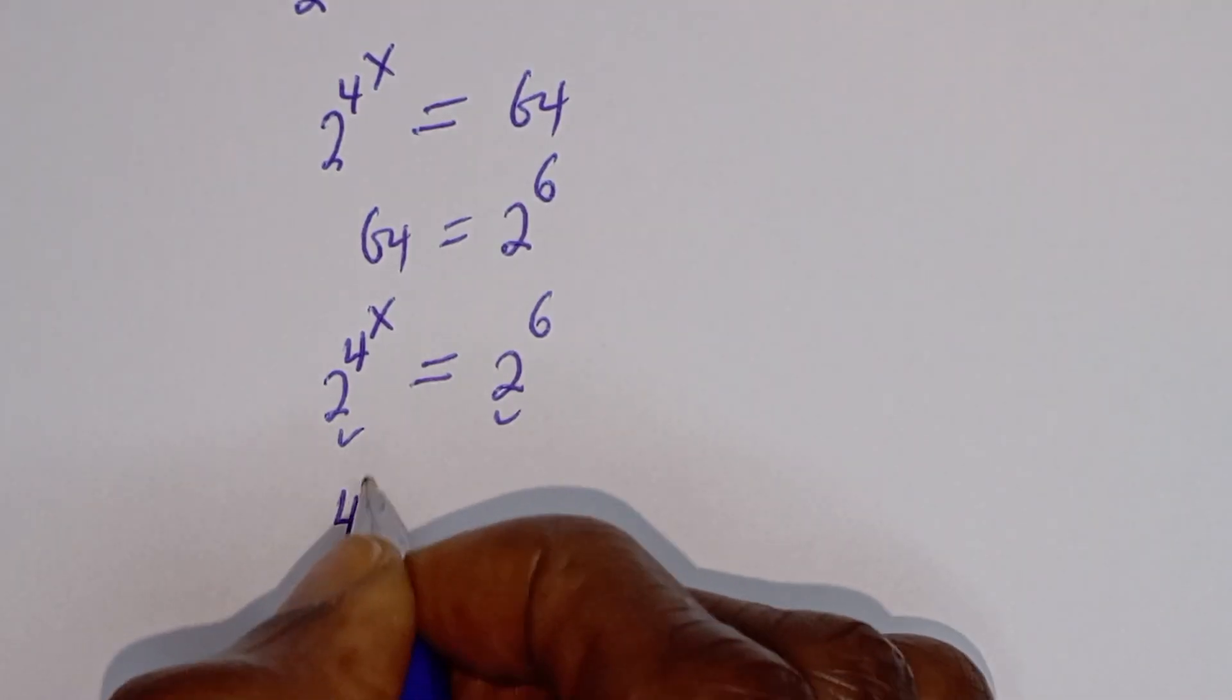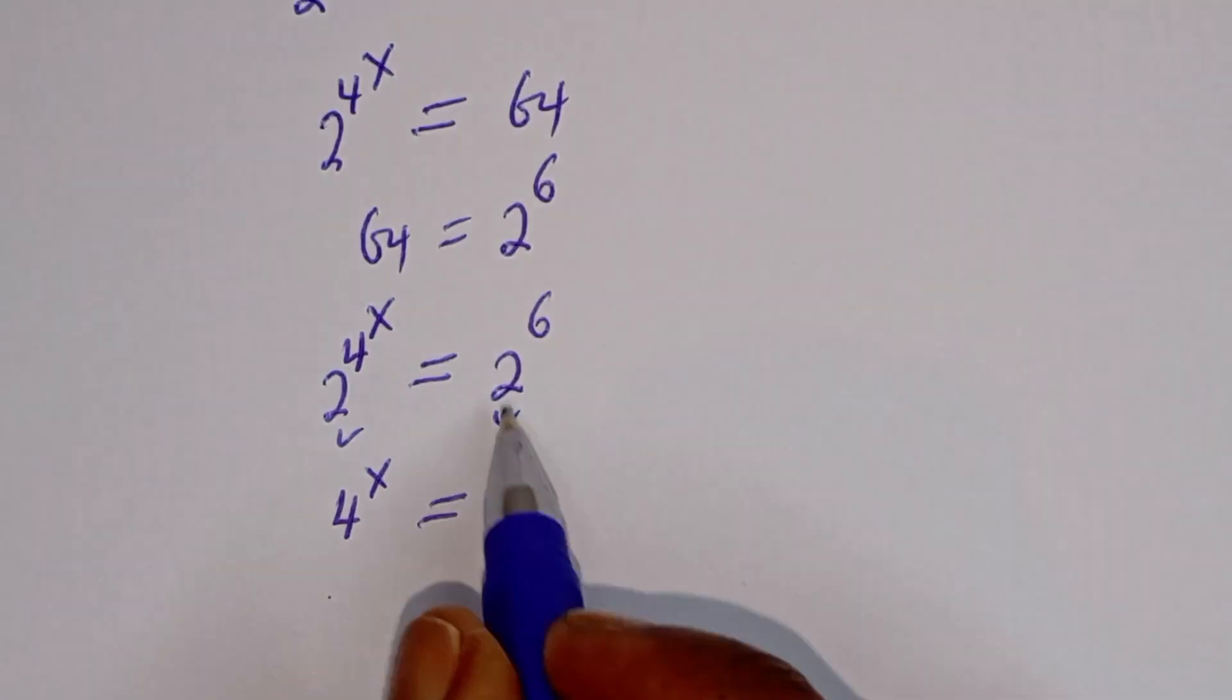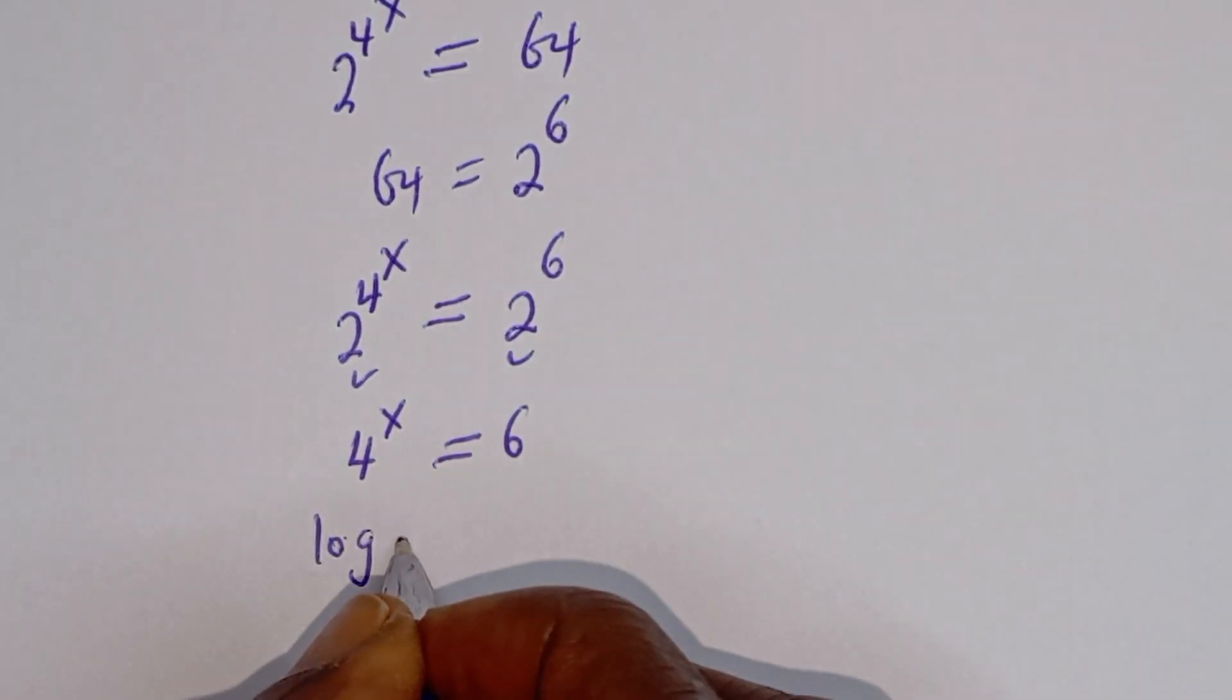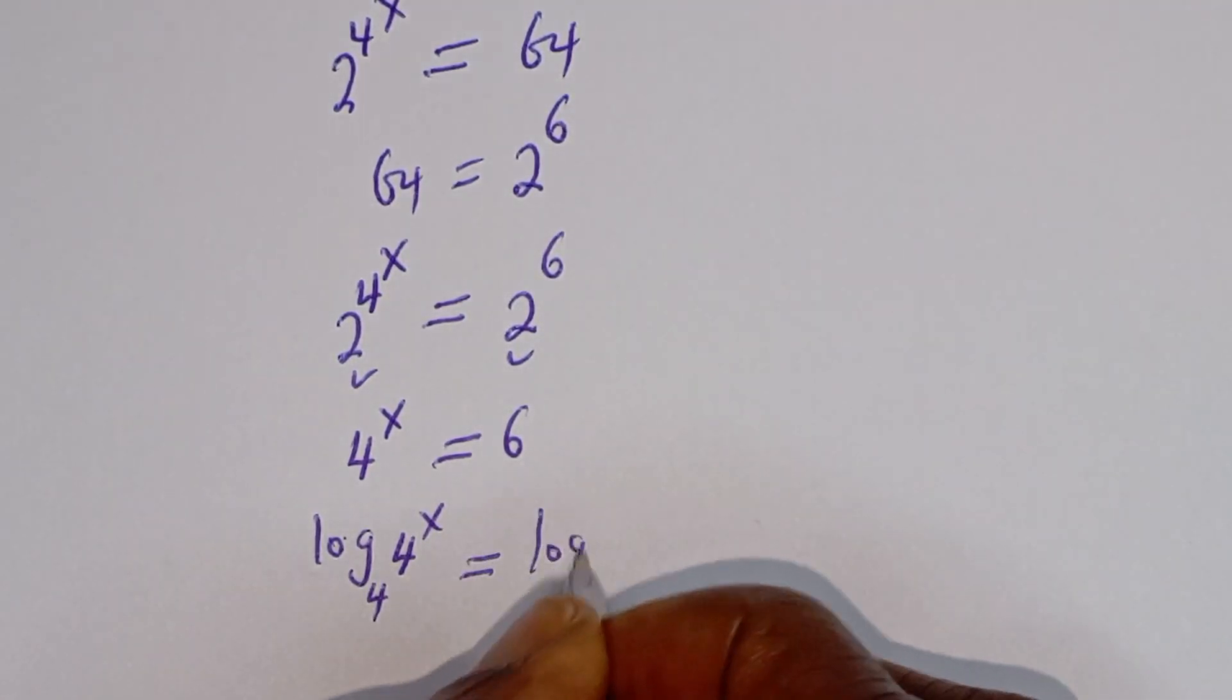Then 4 to the power of s is equal to 6. At this point, let's take the log of both sides. Log 4 to the power of s, let's make it base 4, is equal to log 6 base 4.